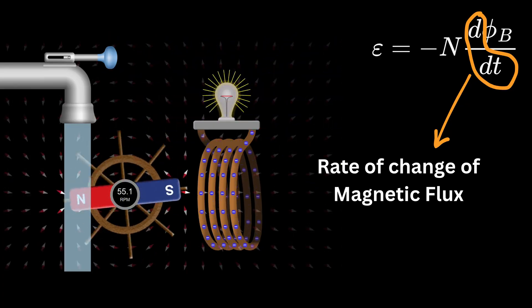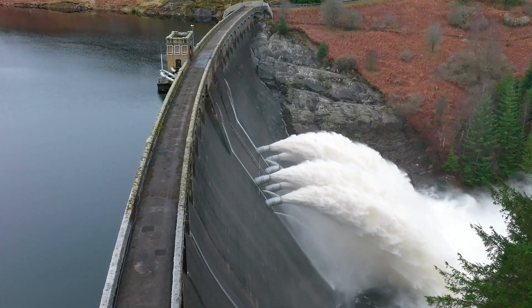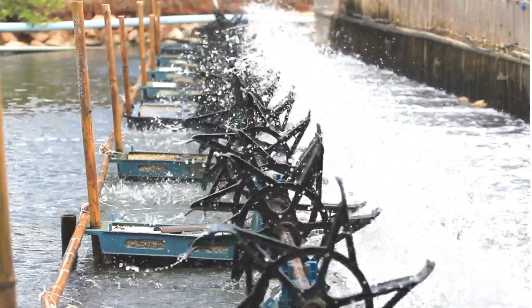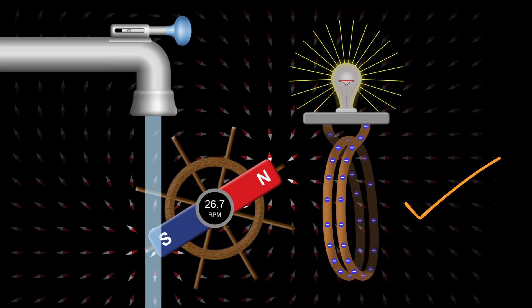That's how generators in dams, wind turbines, and power plants work even today. Water stored in a dam is released and flows downward with great force. This moving water spins a large turbine connected to a magnet. As the magnet spins near coils of wire, electricity is generated.